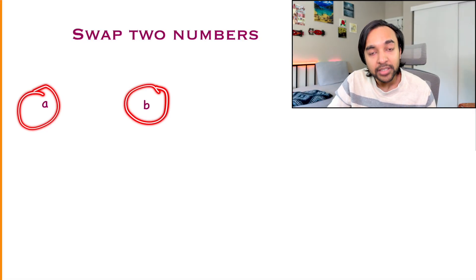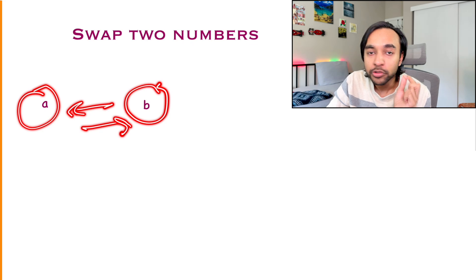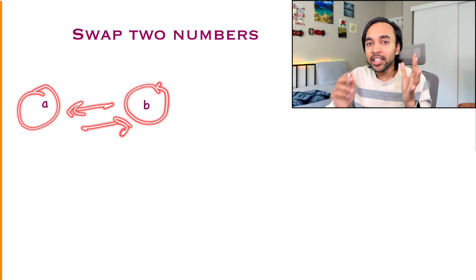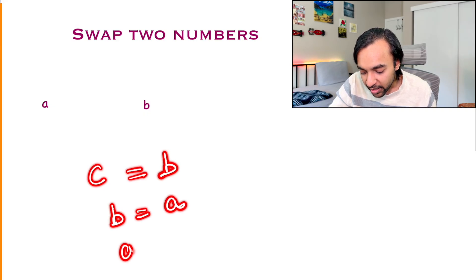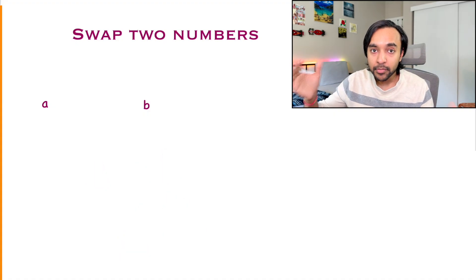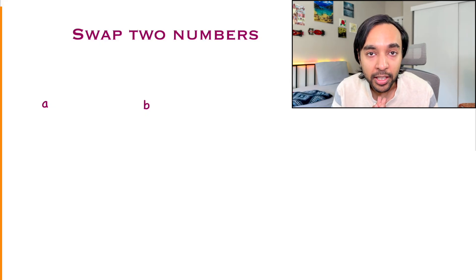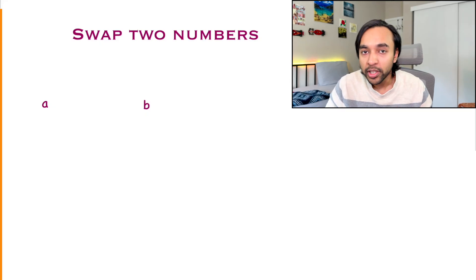You might have heard about this famous problem in a lot of different places. Basically, you are given two numbers, and you have to swap them, but you cannot use a third variable. The traditional method to solve such a problem is you take a temporary variable C and assign it the value of B. Then, you assign B to A, and then you again assign A to C. So, this is how you have swapped both the numbers. But, now you have a constraint that you cannot use a temporary variable. What do you do in that case?